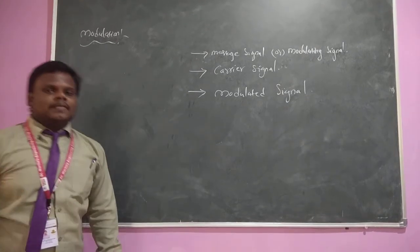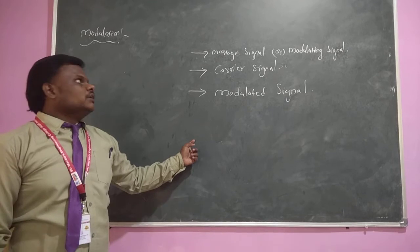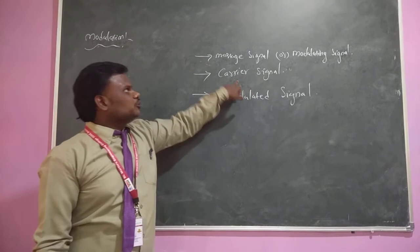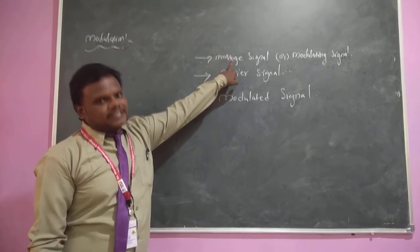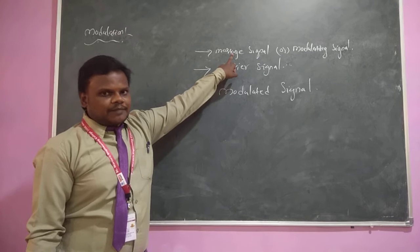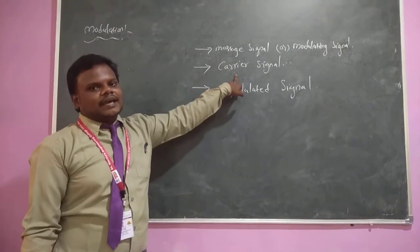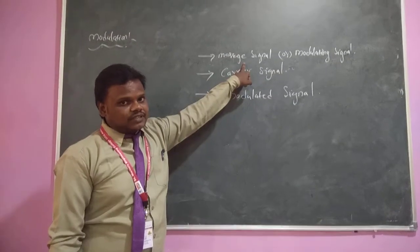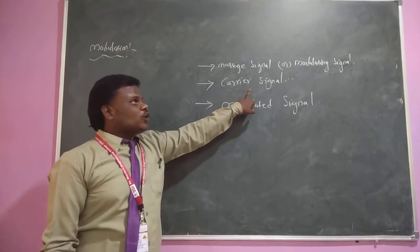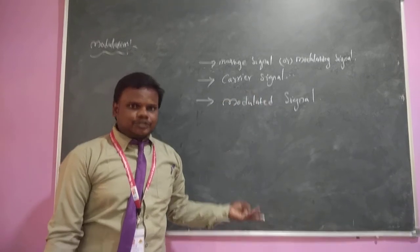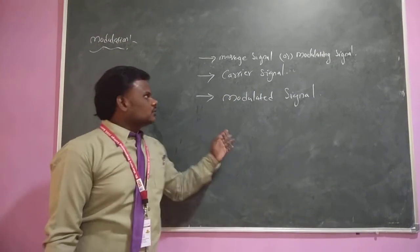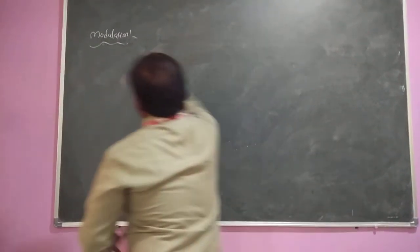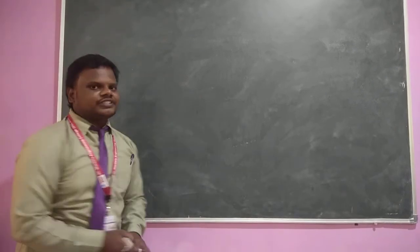Coming to the definition of modulation: modulation is the process of changing the characteristics of the carrier signal with respect to the instantaneous values of the message signal. The properties of carrier signals that can be changed are either amplitude, frequency, or phase.